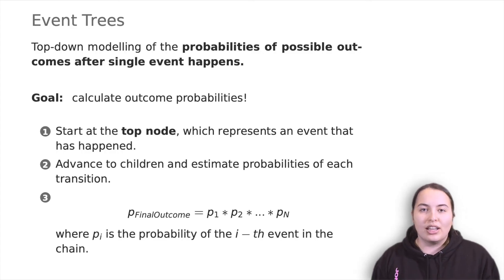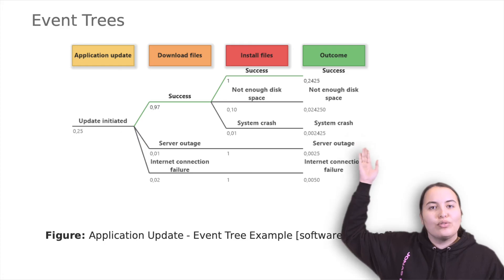An event tree analysis explores an initial event and its effects on the analyzed system. It shows an initial event and events that may follow it with various options. The initial event is usually placed on the left and the outcomes on the right.